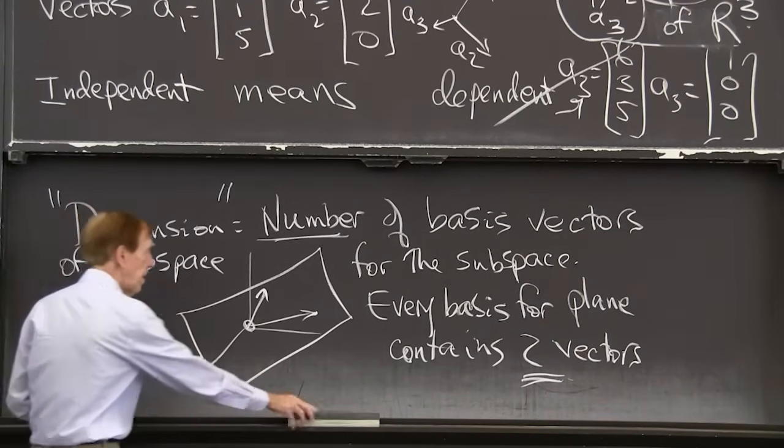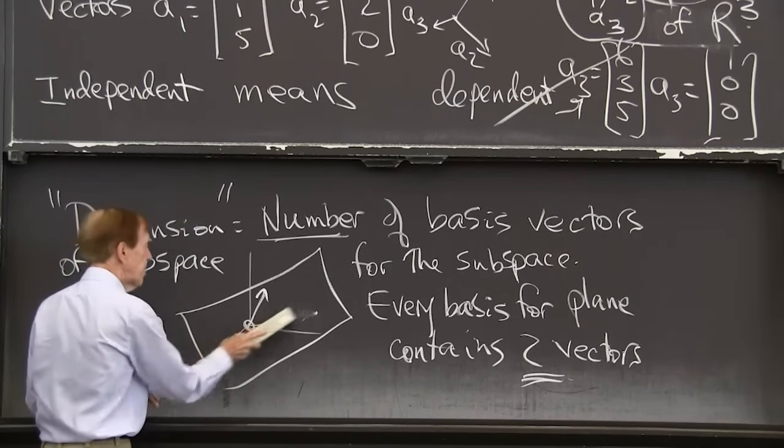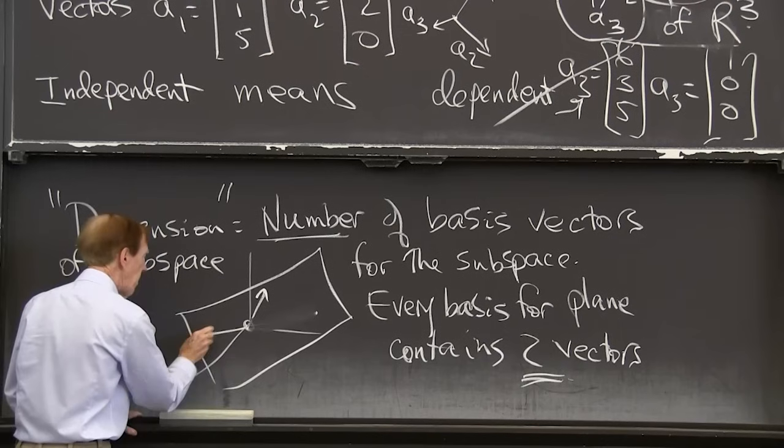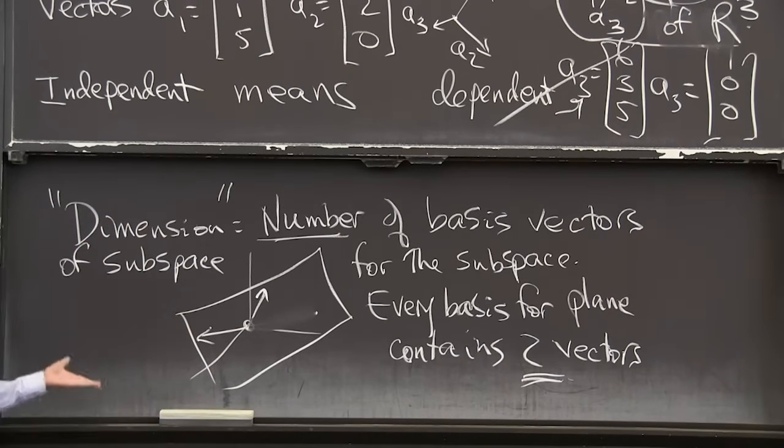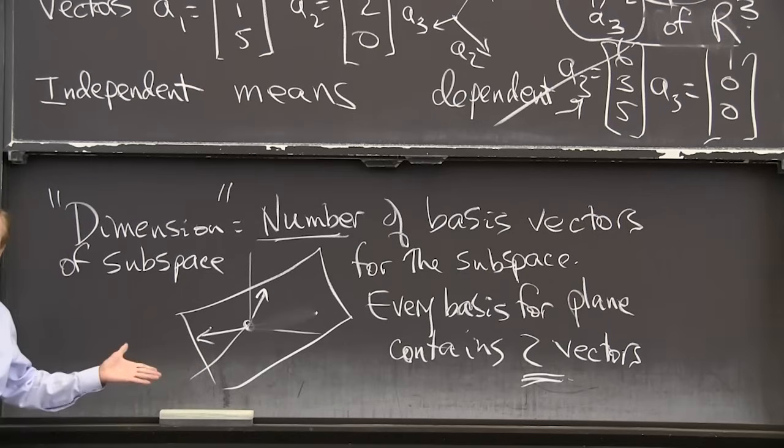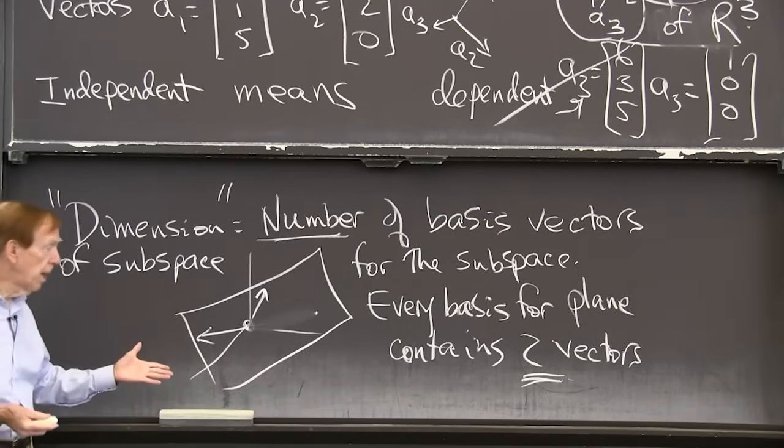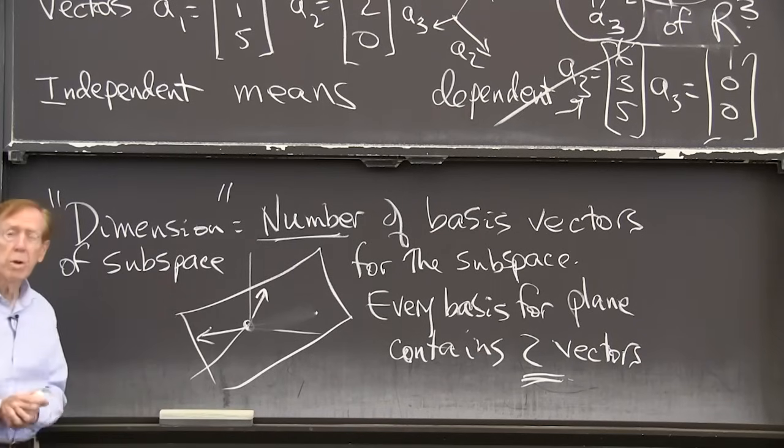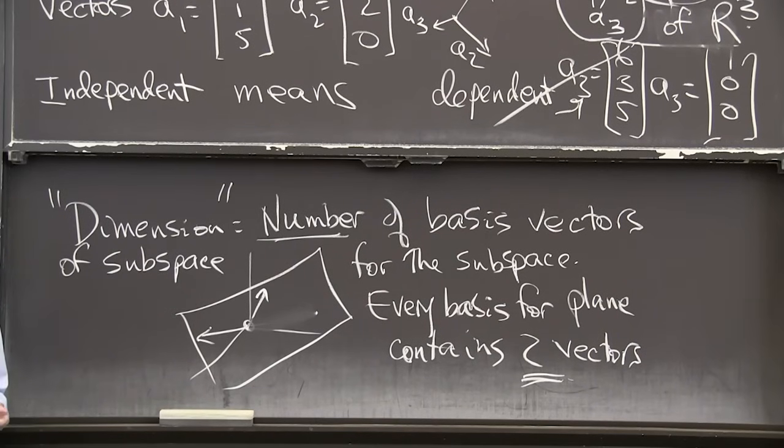Because it takes any vector. And if I didn't like the looks of this one, well, that's no problem. Let me go that way. That's just as good. Those two vectors are independent. They span the plane. They're a basis for the plane. The plane is two dimensional. That's the set of key ideas.